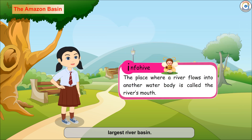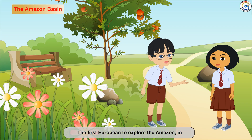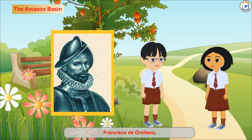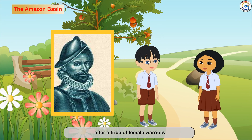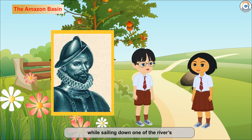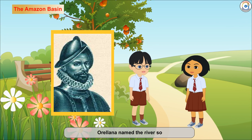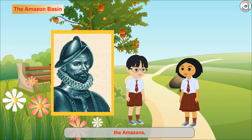The place where a river flows into another water body is called the river's mouth. Here is the map of the Amazon Basin. The first European to explore the Amazon in 1541 was the Spanish explorer Francisco de Aurelana, who gave the river its name after a tribe of female warriors with whom he had a fierce fight while sailing down one of the river's tributaries in Ecuador. Aurelana named the river since he compared these warriors with the legendary Greek female warriors, the Amazons.